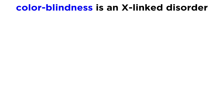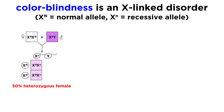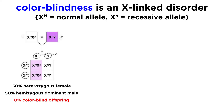With sex-linked genes better understood, we can examine the inheritance of certain traits like colorblindness, which is an X-linked disorder. The normal allele is represented by the letter X with a capital N in superscript, while the recessive allele has a lowercase n in superscript. Say that a homozygous dominant female reproduces with a colorblind male, meaning one recessive allele and a Y chromosome lacking the gene entirely. Offspring have a 50% probability of being female and heterozygous, and 50% probability of being male with the dominant allele, a situation we would call hemizygous dominant, where hemizygous means that only one allele is present. Thus, there is a zero probability of passing on colorblindness, but a 50% probability of producing a carrier.